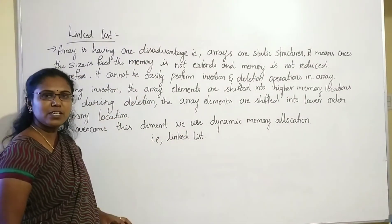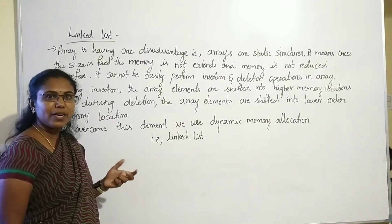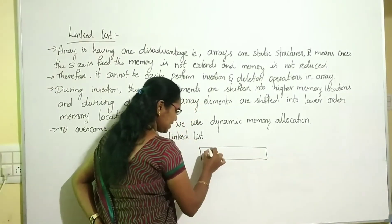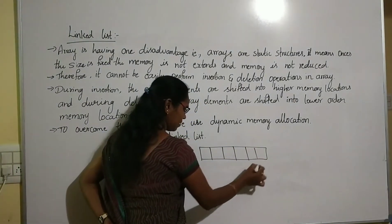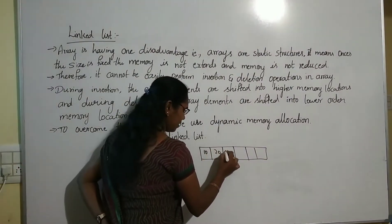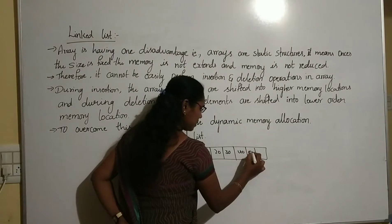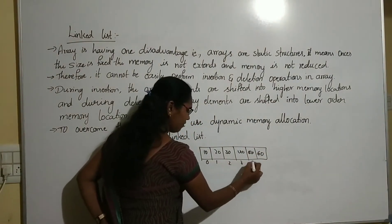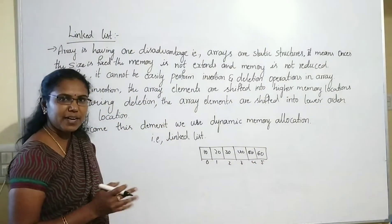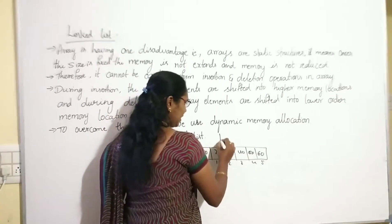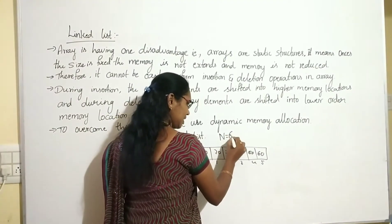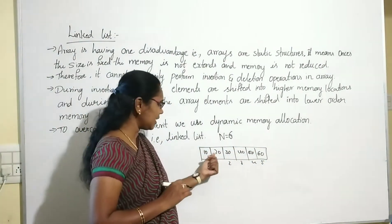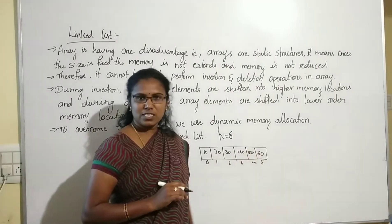In this array, the insertion and deletion operations are difficult to perform. Consider an array of size 6. We are inserting the elements 10, 20, 30, 40, 50, 60 at positions 0, 1, 2, 3, 4, 5. This is a one-dimensional array of size 6 storing 6 elements.